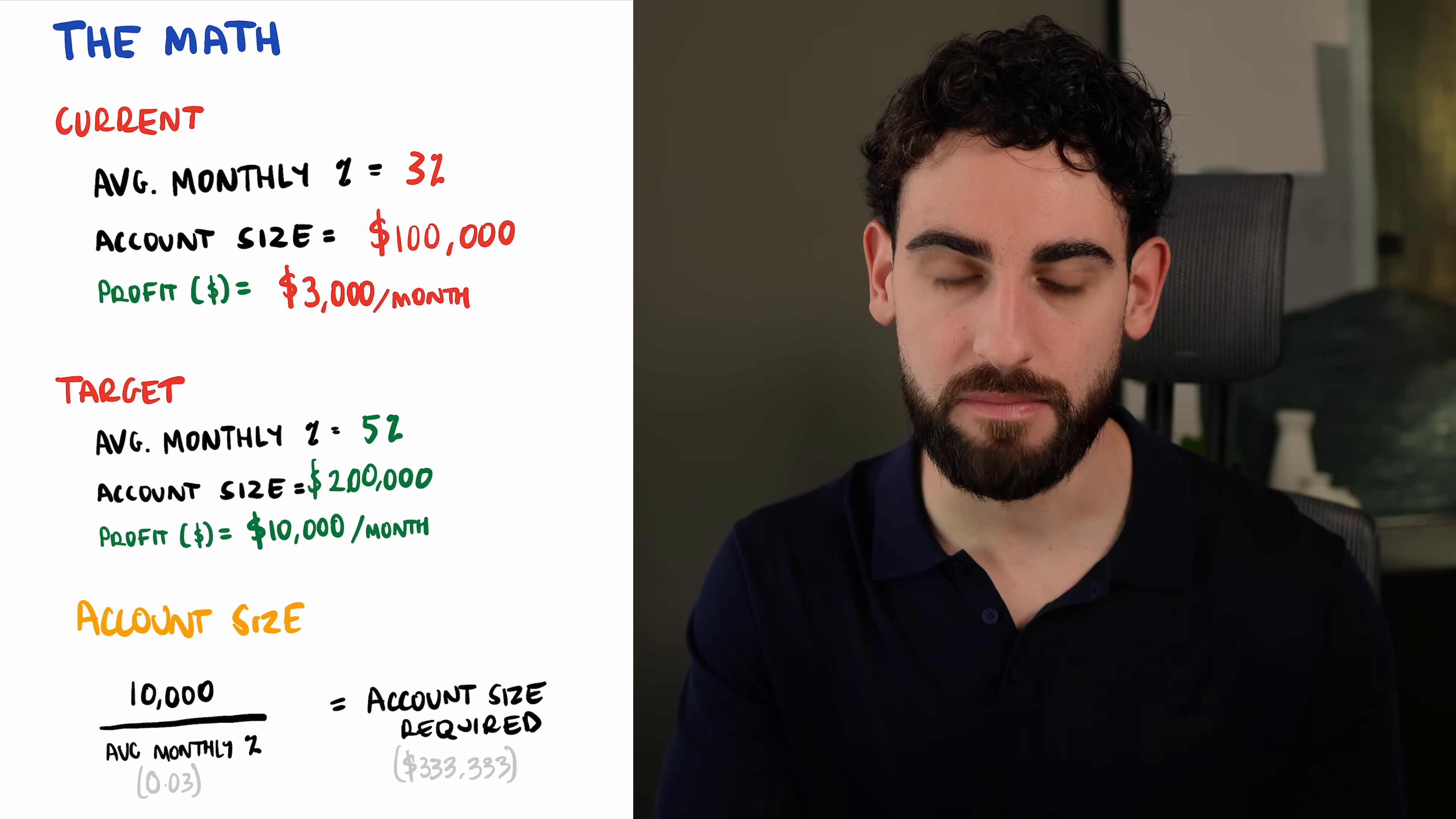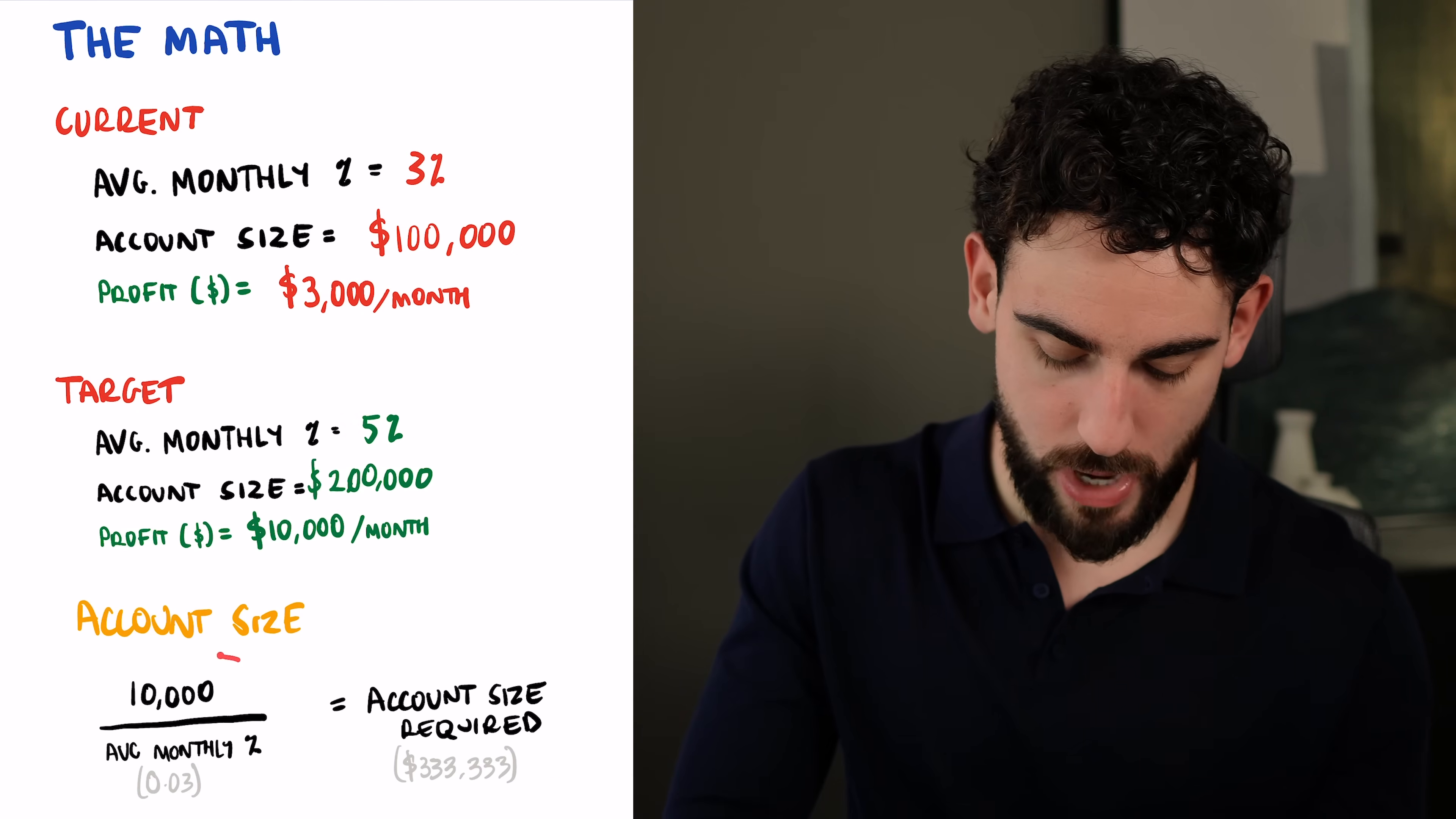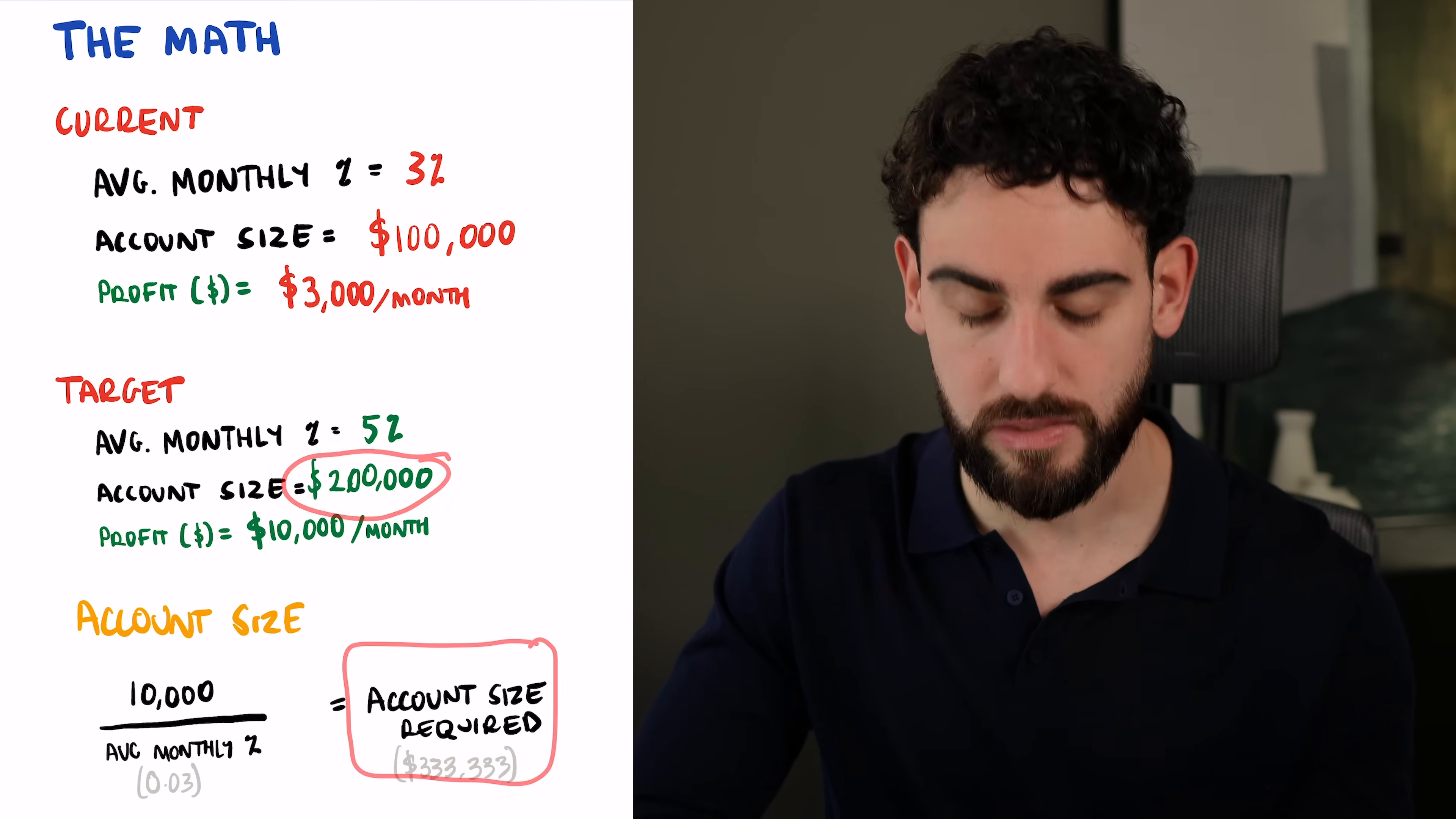Now if you need to make $10,000 a month, because after taxes and savings, that's what's going to meet your expenses so you can move on from your 9-to-5 job, then you set the target at $10,000 per month. If your average monthly percentage is 5%, then you take $10,000 divided by 0.05, which is the percentage in number, and you get your account size required, which is $200,000 account size.